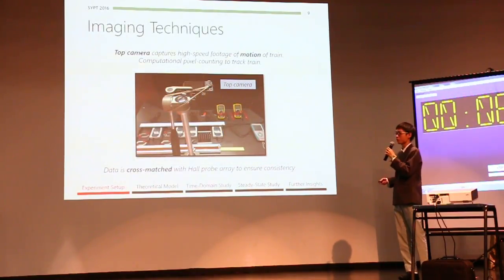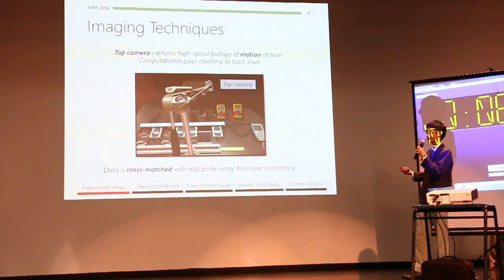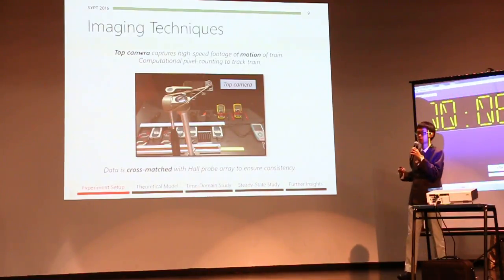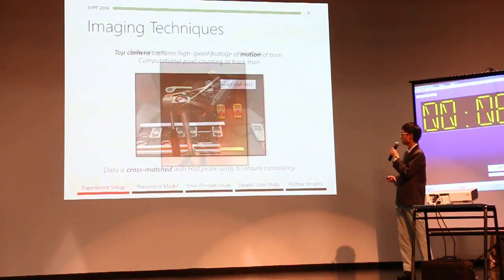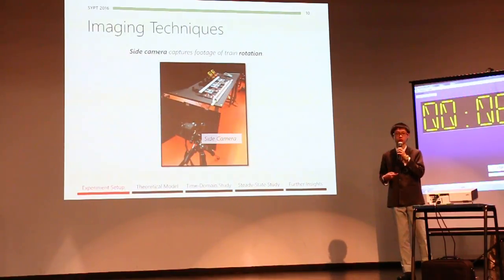And to track our train, we have a top camera view, and we use massive photography and computational pixel counting to track our train as it passes by. And we also have a side camera to record rotational motion of the train if it is present.